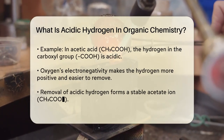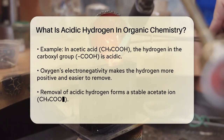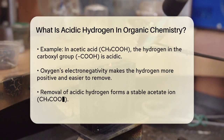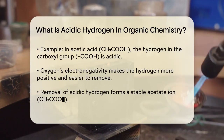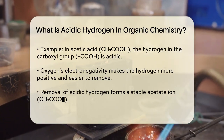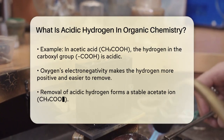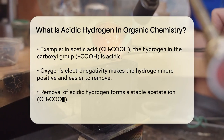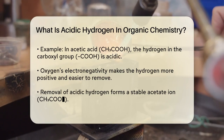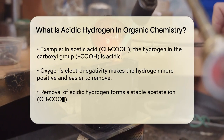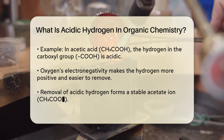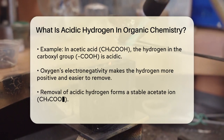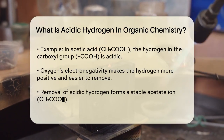When this hydrogen is removed, it leaves behind a stable ion known as the acetate ion, CH3COO-. This ion is stabilized by resonance, where the negative charge is distributed between the two oxygen atoms, making the ion more stable.